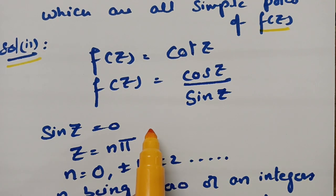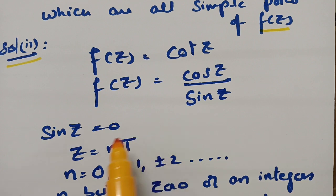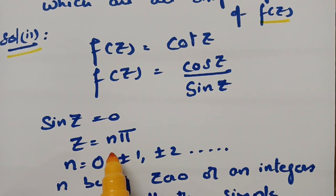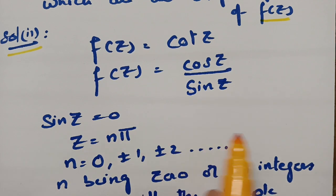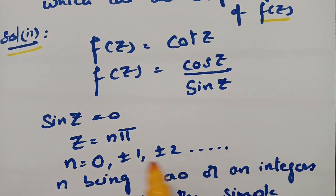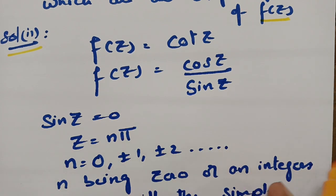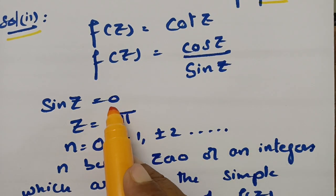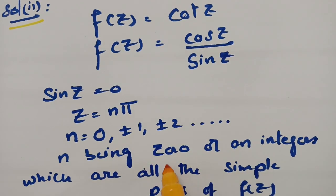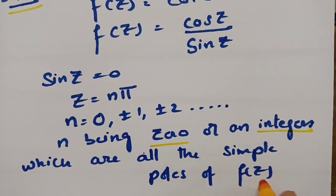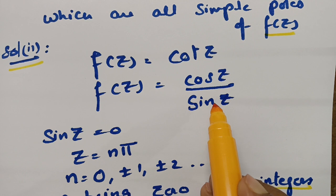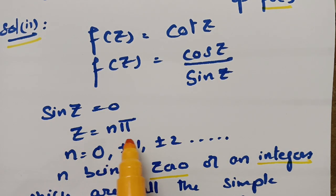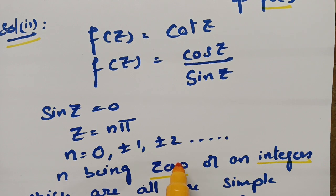When will sin z be 0? At sin 0 = 0, and at 180 degrees it is 0. So z = nπ. When you keep n = 0, 1, 2, 3, all the multiples of π — so 1π, 2π, 3π and so on — sin z will be 0. Here n being 0 or an integer.